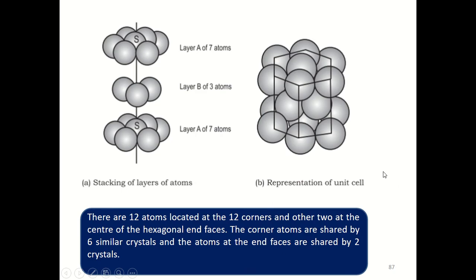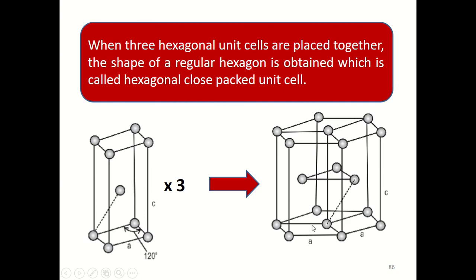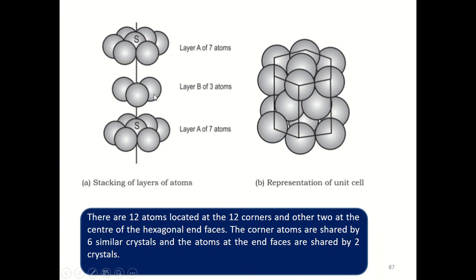Now let us see how these atoms are placed in an actual hexagonal structure. Three atoms are located at the middle layer between the end faces of the hexagonal structure. The top face and the bottom face are the two end faces. The second atom is located at the middle layer. There are twelve atoms located at the twelve corners — you can count: one, two, three, four, five, six, seven, eight, nine, ten, eleven, twelve.